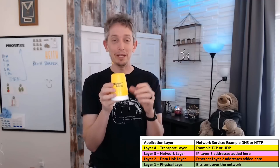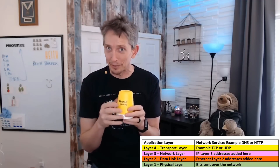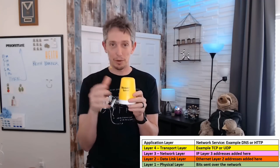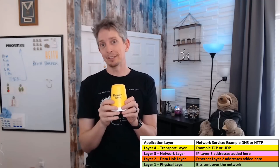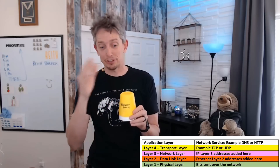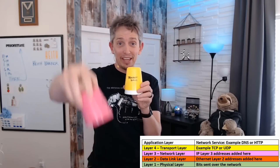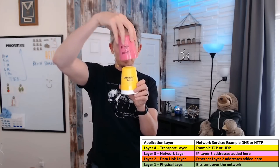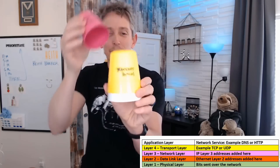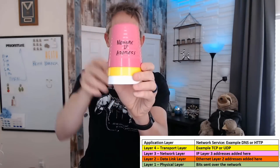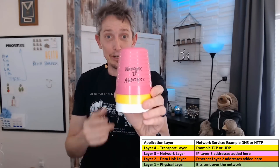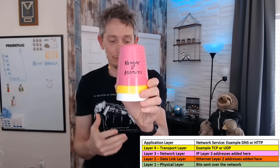The transport layer — in this case UDP — needs a little help from layer 3, which is the network layer. At the network layer, that's where we add the IP addresses: the source IP address of the client making the request and the destination IP address of the server we're trying to reach. So we add that on as a separate layer — on top of the transport protocol, which is UDP in this example, we add a header that contains the IP address information.